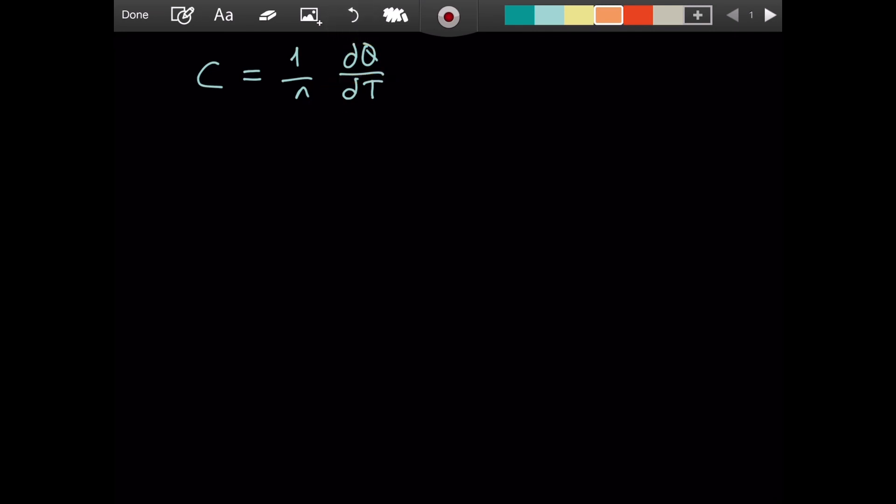Now this represents a rate of change. You could have used delta q over delta t, but when you put delta next to q, which is heat, and t is the temperature, that would represent a change in the amount of heat that you give. But if you use delta, that means that the magnitude of the change can be in any magnitude. It might be a big change, might be a small change.